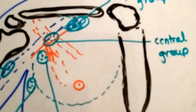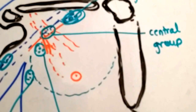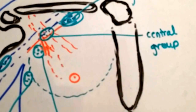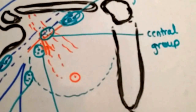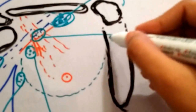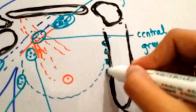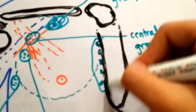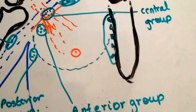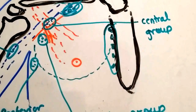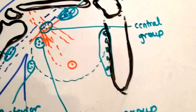The medial half of the breast actually drains into the second and third intercostal space, or the internal mammary lymph nodes, and they are situated retrosternally. I'm drawing them out here. That's another group of lymph nodes you are supposed to know.